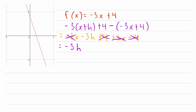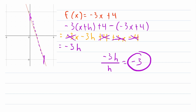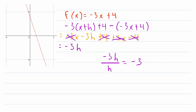We are left with negative 3h. But this is not the difference quotient — remember, we need to divide by h. So for the difference quotient, we divide that numerator by h. The h's cancel out, leaving us with negative 3. This is our difference quotient. Notice there are no variables — no x and no h. This means it doesn't matter what point you start at or how far away you go; the average rate of change will always be negative 3. For a linear function given in slope-intercept form, the slope is negative 3, so the difference quotient confirms what we already knew.